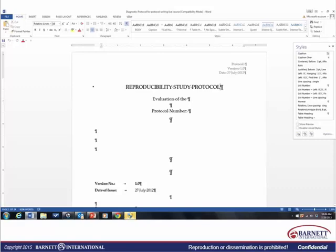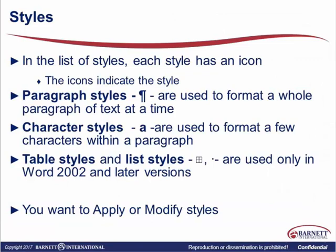When you hit that panel, it'll show you all the styles available — some in use, some may be old styles no longer used. It's a good idea to clean up your document and remove old styles that might be running in the background. There's an icon to the right of each style that indicates the type: paragraph styles have a paragraph symbol and are used to format a whole paragraph at a time; character styles are used to format a few characters within a paragraph. Table styles and list styles typically have a box, bullet, or dash, and are only available in Word 2002 and later.